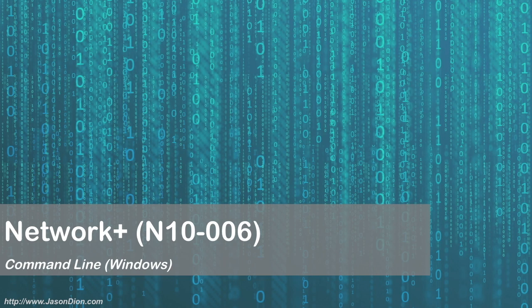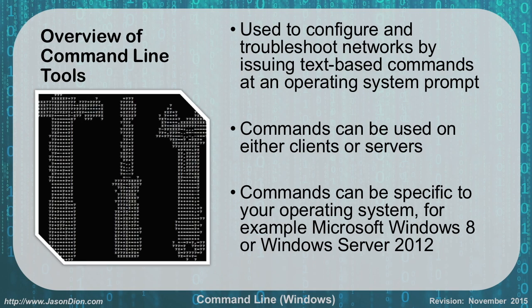In this lecture, we're going to talk about the command line and the different commands we're going to use during our troubleshooting process. This lecture is going to be focused on Windows; our next lecture will be focused on Unix. We use these tools to configure and troubleshoot our networks by issuing text-based commands at an operating system prompt. The commands can be used on clients or servers, and for most of the time these commands are going to be similar whether you're using a host or server operating system. These commands are specific to your operating system — in this example we'll be using Windows 8 and Windows Server 2012, and they'll work on most Windows operating systems.